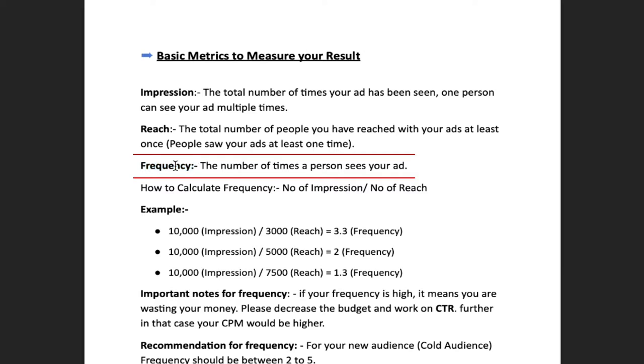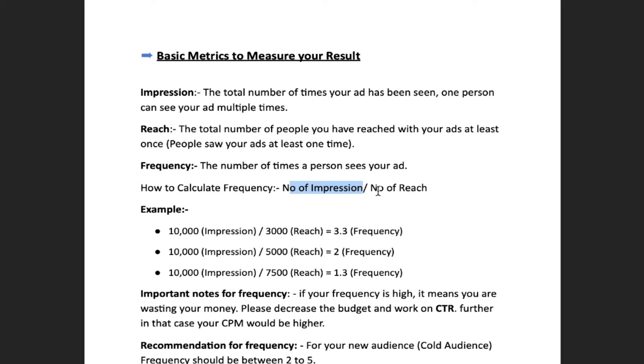Here's the difference: if one person sees your ad 10 times, Facebook counts 10 impressions but only one reach. For example, if Facebook delivers 10,000 impressions covering 3,000 reach, that means Facebook targeted 3,000 people and showed them ads 10,000 times total. To calculate how many times each person sees your ad on average, we use the frequency metric. The formula is: frequency = impressions divided by reach. So 10,000 impressions divided by 3,000 reach gives a frequency of 3.3.